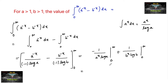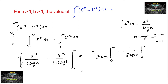As x tends to infinity, 1 upon a to the power of x tends to 0, since a is greater than 1. Similarly, as x tends to infinity, 1 upon b to the power of x also tends to 0, since b is greater than 1.